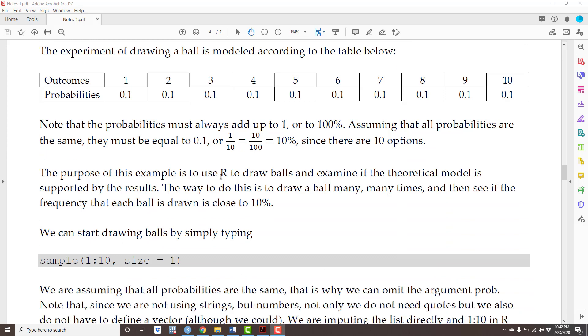The purpose of this example is to use R to draw balls and examine if the theoretical model is supported by the results. So basically what we are going to do is we're going to draw a ball and repeat that many, many times. And then you are going to verify if the frequency that each ball was drawn is close to 10% because that's what the model predicted.